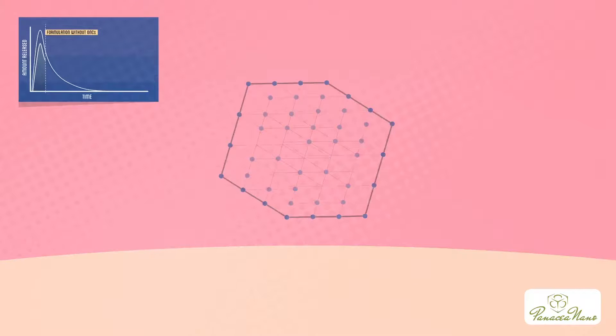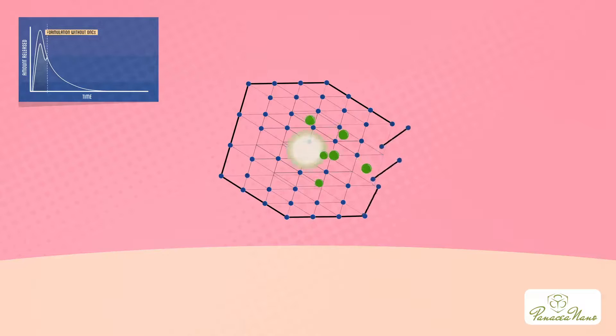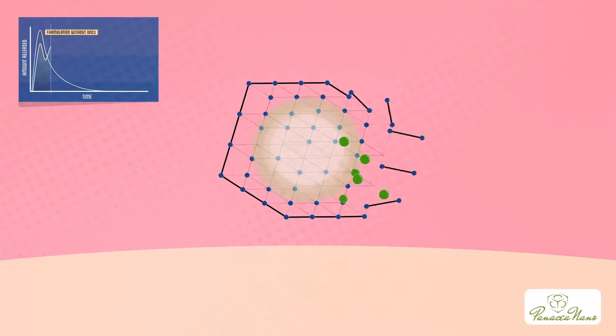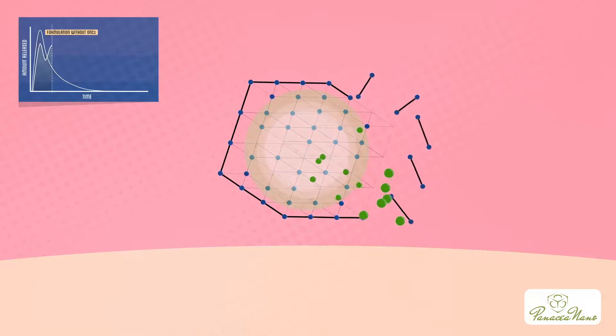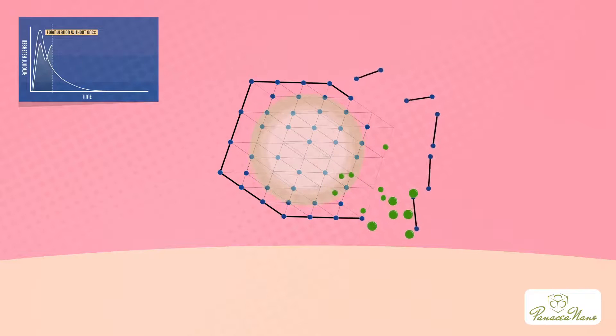However, this is where the magic comes. While the free agents are diffusing to your skin, some of the trapped agents in the ONCs start to come out. In addition, some smaller ONCs can break down by moisture or abrasion to release some more agents.